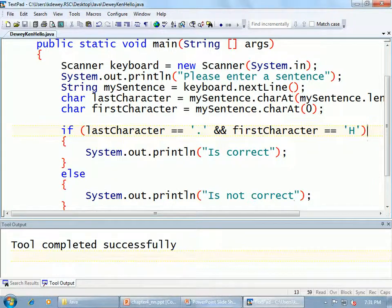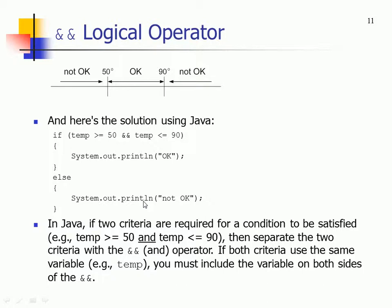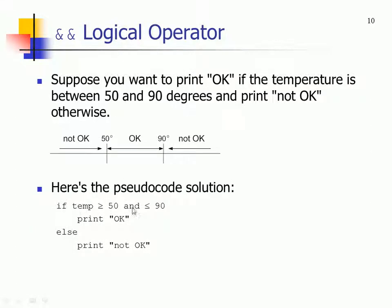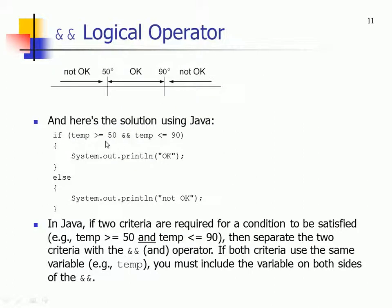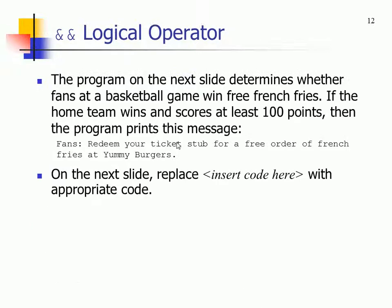In pseudocode, you can say 'if temperature is greater than 50 and less than 90' — but in Java you need to say 'if temperature > 50 && temperature <= 90.' You've got to repeat 'temperature.' It doesn't have a clue what to do otherwise. So if two criteria use the same variable, you still must include it each time.